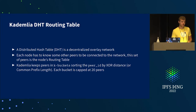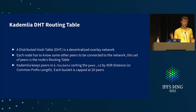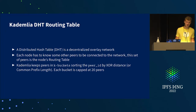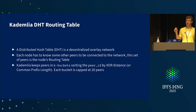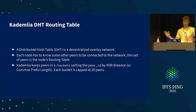What is the Kademlia DHT routing table? Kademlia is a DHT, which is an overlay network — decentralized. In an overlay network, you need to know the contact details of some other peers; otherwise you wouldn't be part of the network. Those peers are stored in your routing table. Kademlia has a specific implementation: it keeps peers in K-buckets, sorted by peer ID using XOR distance, and each bucket is capped at 20.